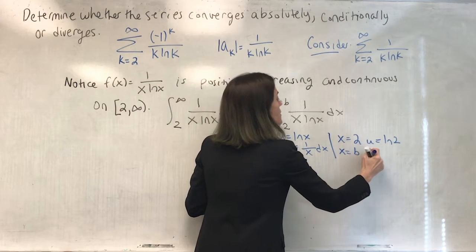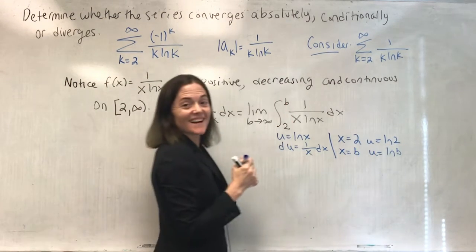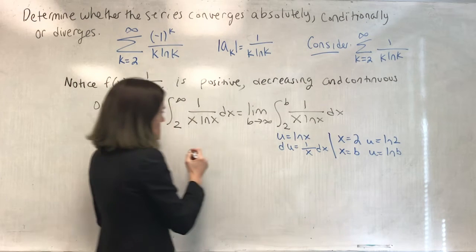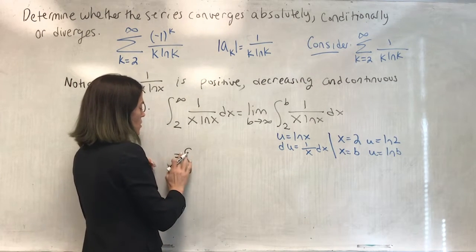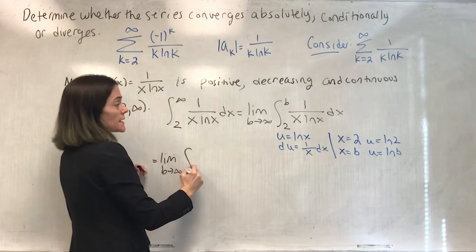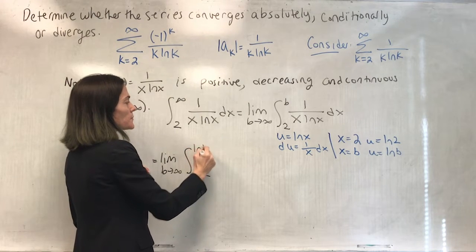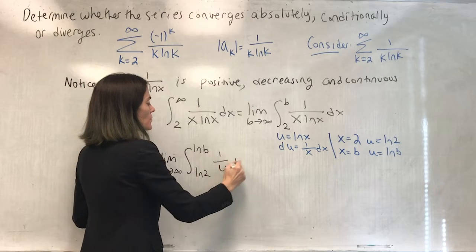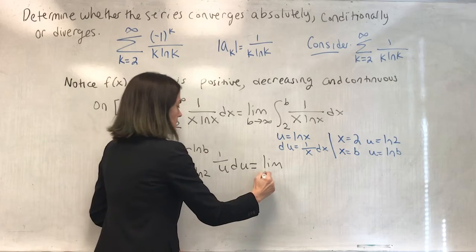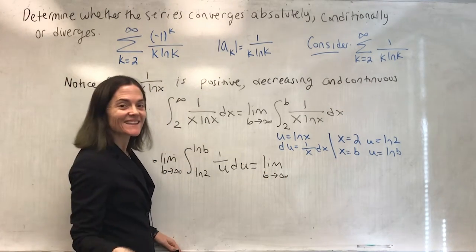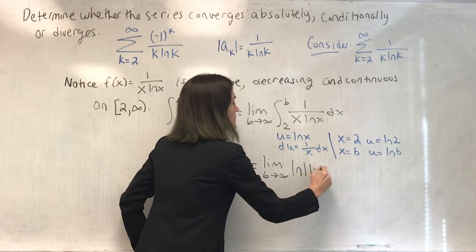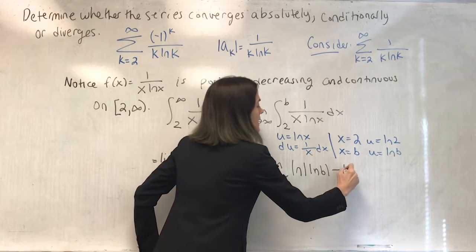Now we're ready to convert to an integral of u. This is a limit as b goes to infinity of the integral from ln 2 to ln b of 1/u du. Taking the limit as b goes to infinity, I can integrate and evaluate. I get ln|ln b| minus ln 2. Now, as b goes to infinity, natural log grows without bound, and then we take the natural log of that — this diverges.